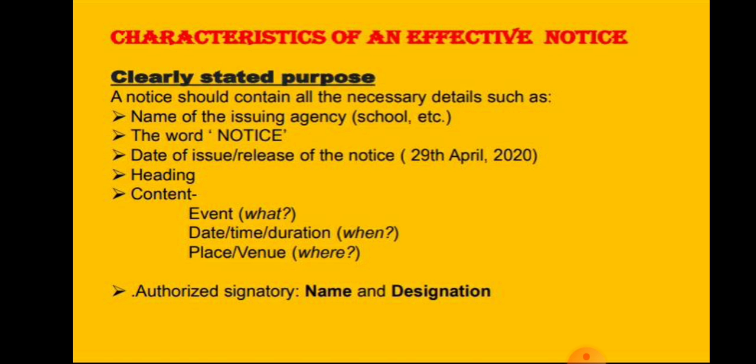The details given in the content should answer three questions. First, what is the purpose — we have to mention the event. Second, when — we have to give information about the date, time, and duration of the event. Third, where — we have to provide details about the place and venue where this event will be held. Like this, you will be creating all the necessary details in the content.